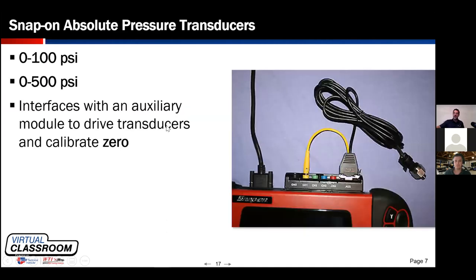Snap-on transducers are functional — I grew up with them in pressure waveform analysis — but they're very costly. They make a zero-to-100 psi and a zero-to-500 psi transducer, both around $500 each last I checked. When coupled with the Snap-on scope they don't work as well as you'd expect, though they do work. Once you start using a capable PC-based lab scope with better screen resolution and better zoom capability, you'll be hard-pressed to go back to a handheld device — but I'm not knocking Snap-on.